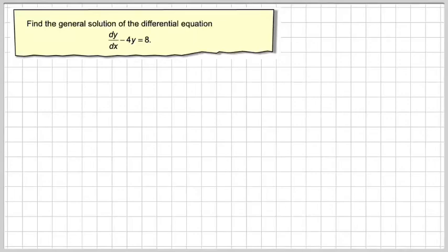Welcome to the fourth of my videos here on solving differential equations by separating the variables. So here we're going to find a general solution of a differential equation, dy by dx minus 4y is equal to 8.